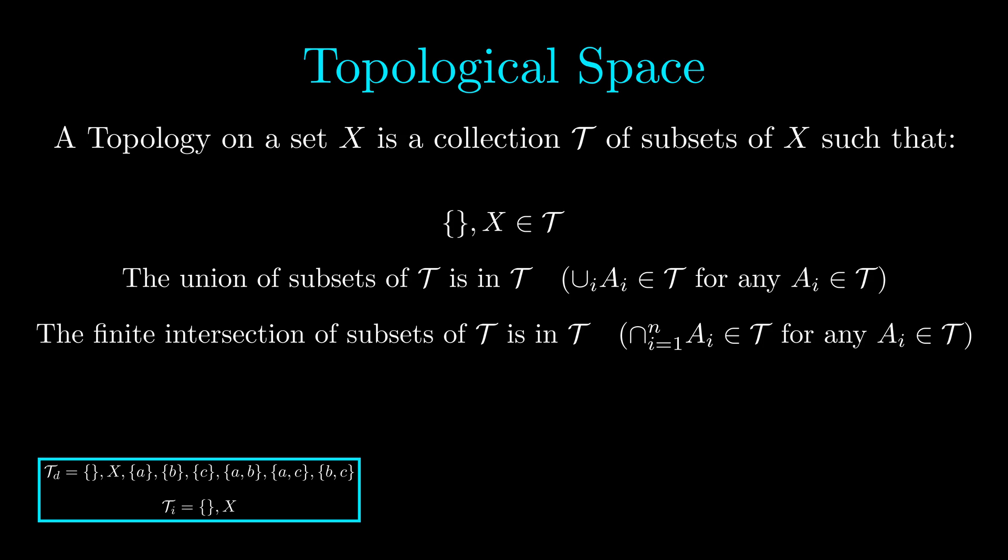So whenever we have a set X for which we have chosen some collection T that satisfies these criteria, then we say we have established a topology on X and the pair X, T are called a topological space.